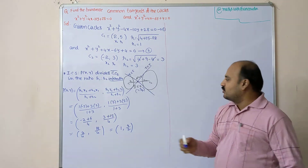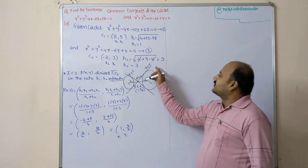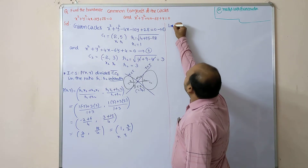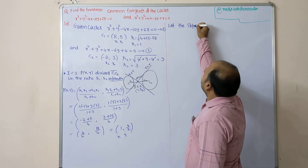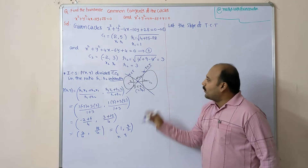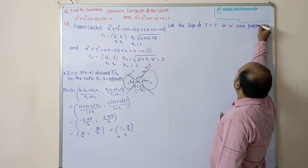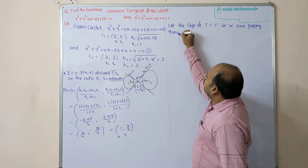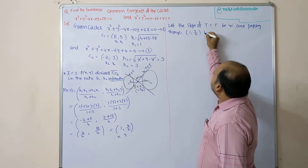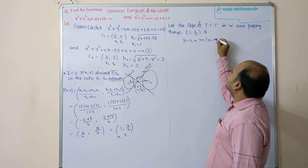We have found point P(x, y) = (1, 9/2). This gives 3 marks out of 7. Next, we find the equation of the transverse common tangent. Let slope m be the slope of the transverse common tangent, passing through the point (1, 9/2).